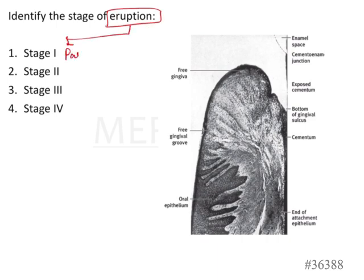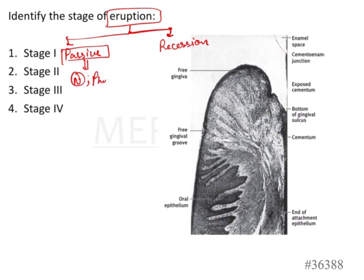When we talk about eruption, there are two things: passive eruption and recession. Passive eruption is considered normal by many scientists — although there are always arguments about that — and it is considered more or less a physiological process.